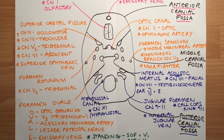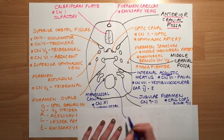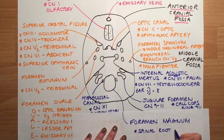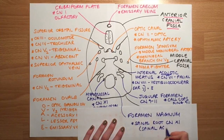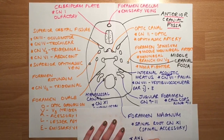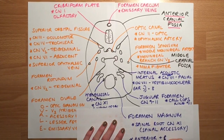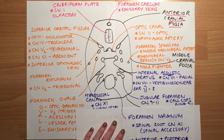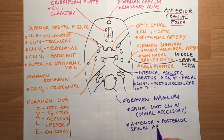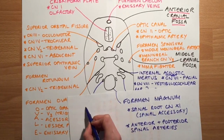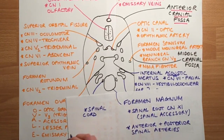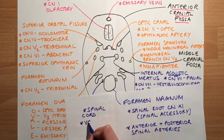Next we look at the foramen magnum, which is the biggest foramen of the skull and transmits several structures. First, the spinal roots of cranial nerve eleven, the spinal accessory nerve. It also transmits the anterior and posterior spinal arteries. The next structure is the spinal cord — specifically the medulla oblongata portion. Finally, the vertebral arteries also pass through the foramen magnum.